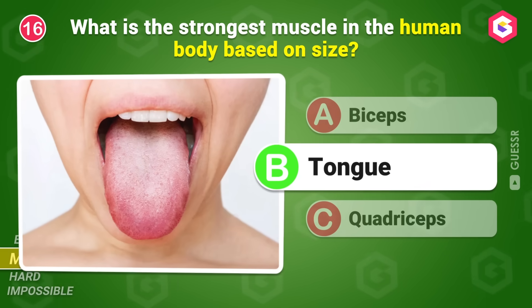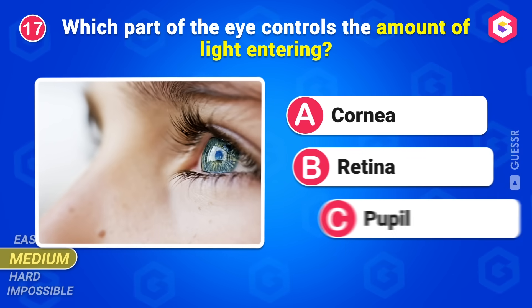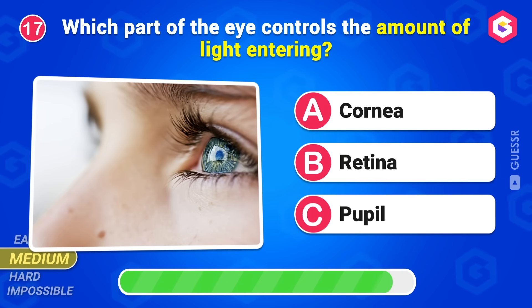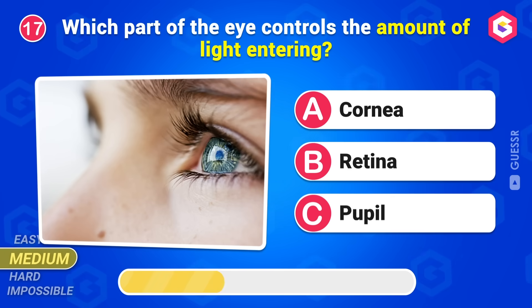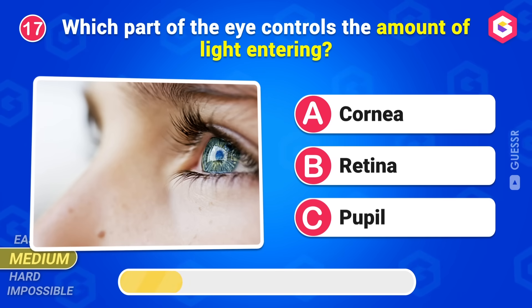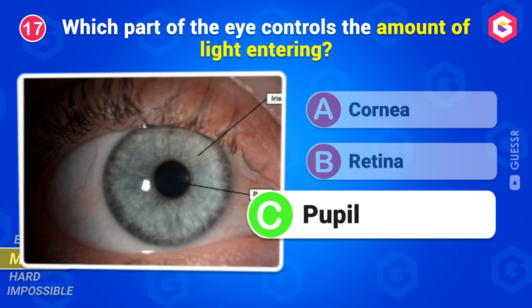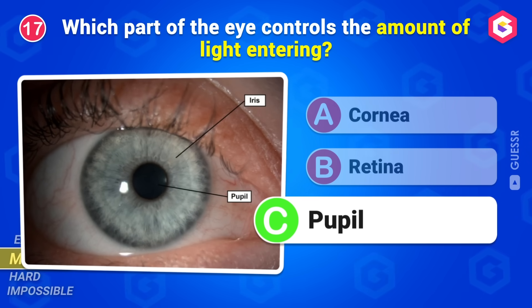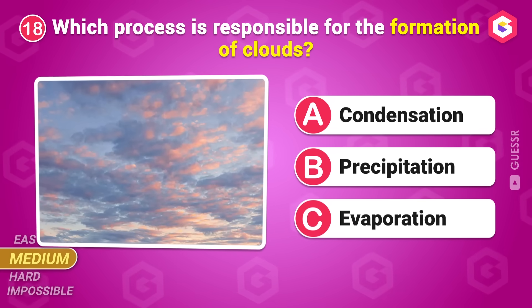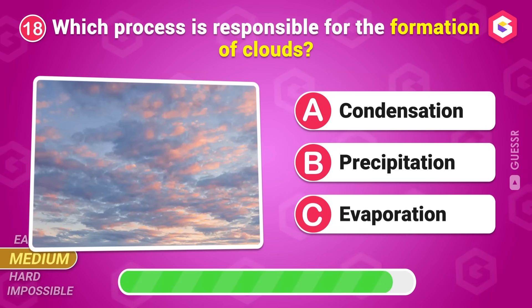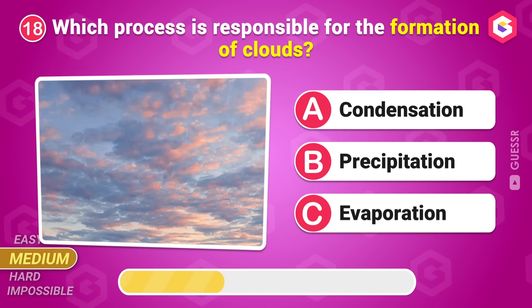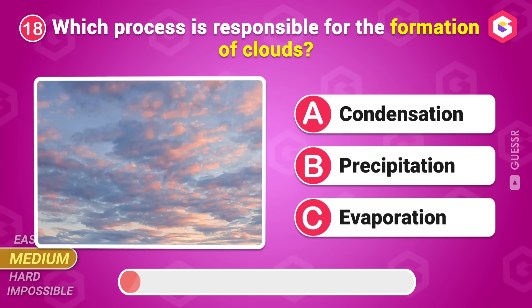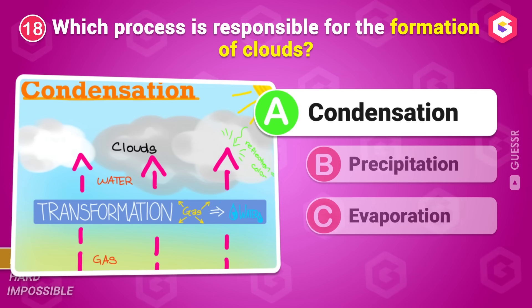What is the strongest muscle in the human body based on size? Tongue. Which part of the eye controls the amount of light entering? Pupil. Which process is responsible for the formation of clouds? Condensation.